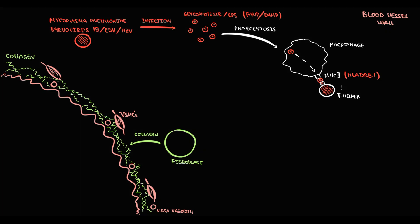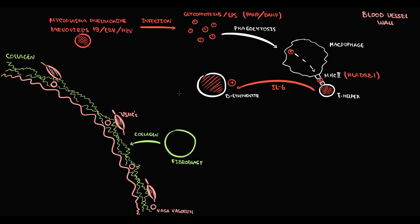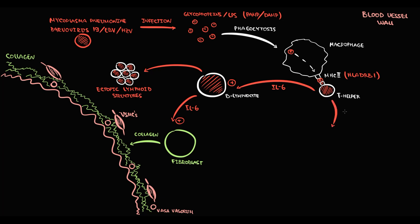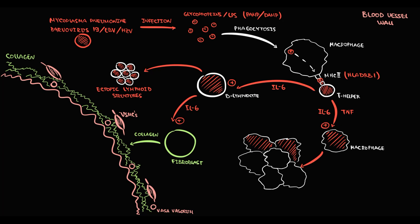Once T-helpers become activated, they activate B-lymphocytes via production of interleukin-6. When B-lymphocytes become activated, they first stimulate fibroblasts by producing interleukin-6. Also, in the activated state, B-lymphocytes excessively proliferate, potentially causing formation of ectopic lymphoid structures. T-helpers also stimulate macrophages by producing interleukin-6 and TNF. Massive activation of macrophages results in their proliferation and fusion, with formation of giant cells.